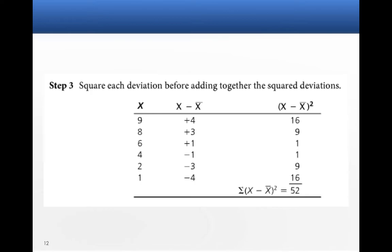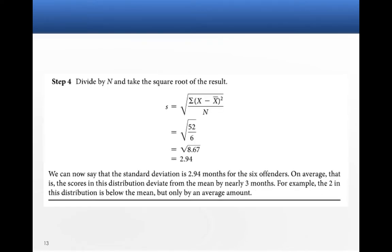That gets us the sum of the squared deviations. Then we're going to divide it by the number, by n, the number in our sample, which was 6. That gets us the variance. And then we're going to take the square root, and that gives us the standard deviation.